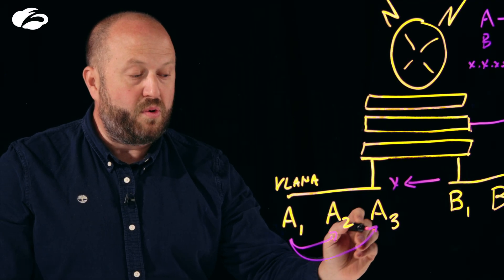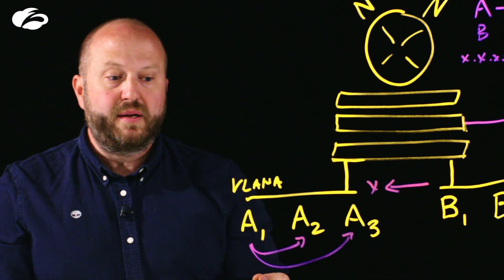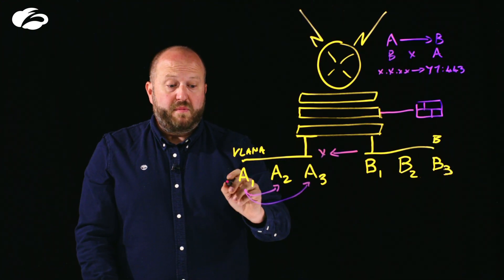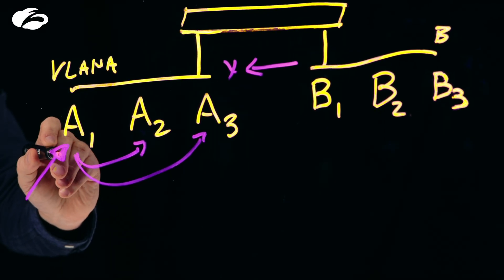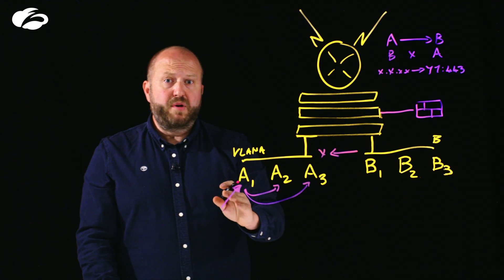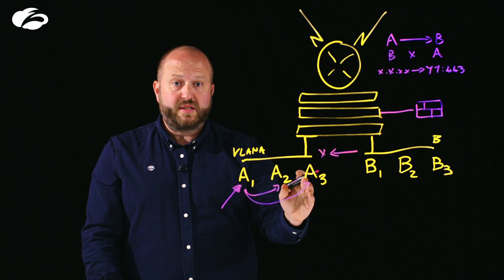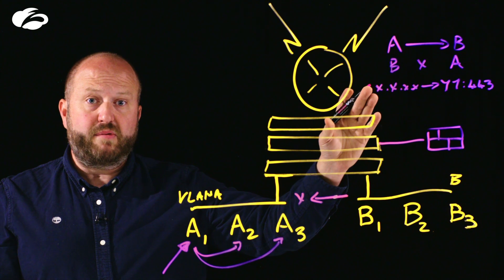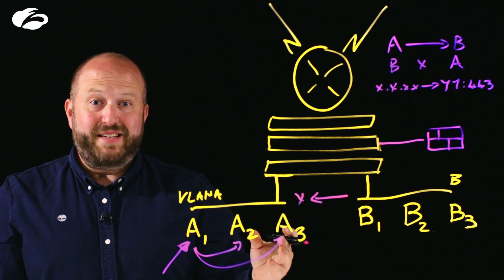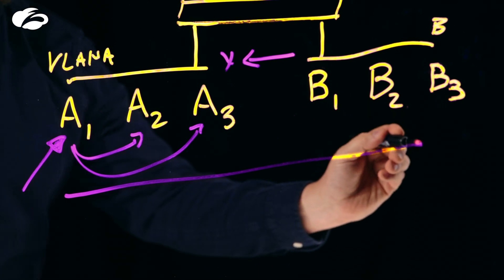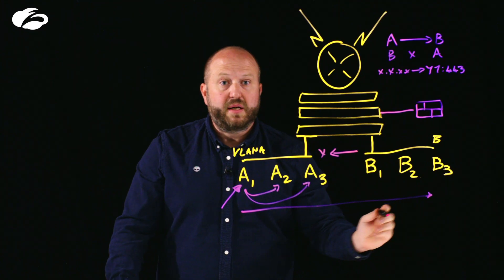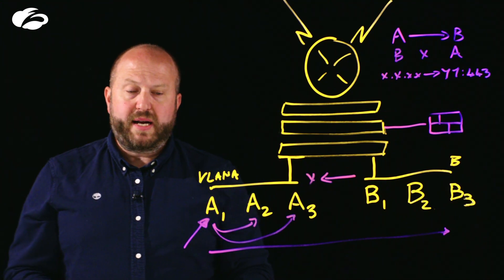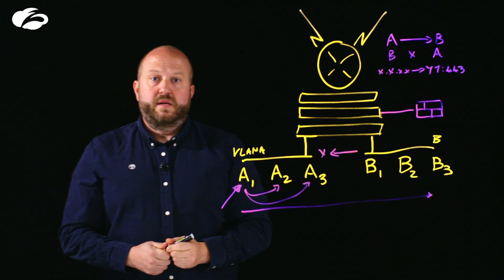So A1 can talk without going through an enforcement point to A2 and A3. Why this is a problem is that when an attacker compromises the device at VLAN A, it can move laterally across that entire network segment. And in fact, because of the complexity of these firewall rules, generally there's issues and holes, and that attacker can move naturally across the entire network, compromising the entire organization. We see this time and time again with ransomware attacks.